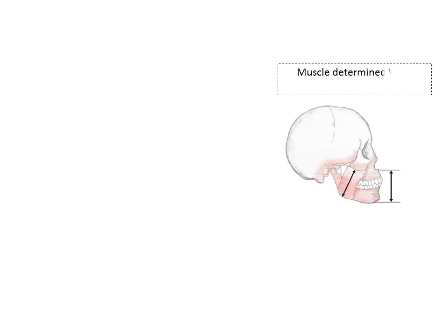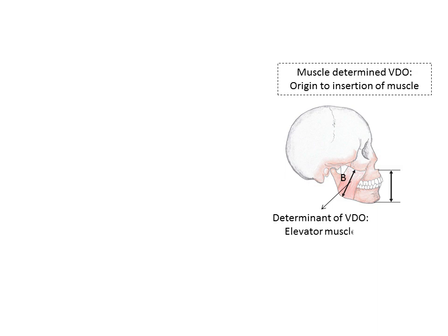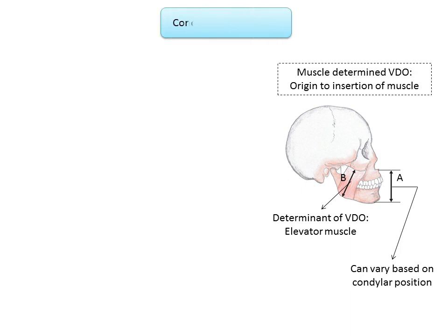The muscle-determined vertical dimension of occlusion must be measured from origin to insertion of the masseter muscle — clinically from the zygoma to the angle of the mandible. If there are no deflective occlusal interferences requiring downward displacement of the TMJs from centric relation, the vertical dimension in the anterior region will remain constant. If you increase the vertical dimension, it will revert back as the muscles close the bite to where it was. This position can vary depending on condylar position.